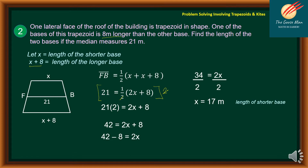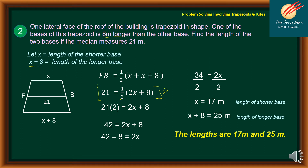So this is the length of the shorter base. To find the length of the longer base, that is 17 plus 8 is equal to 25 meters. Therefore, the lengths are 17 meters and 25 meters.